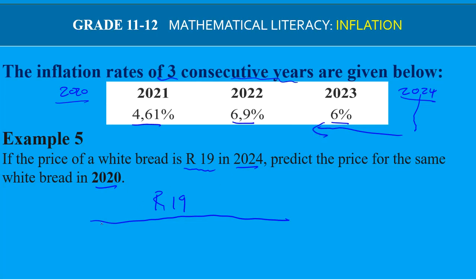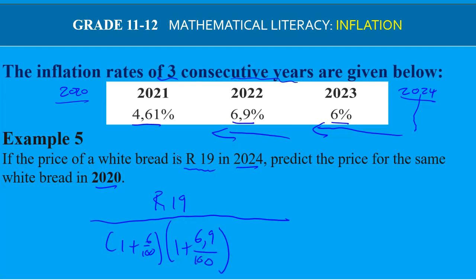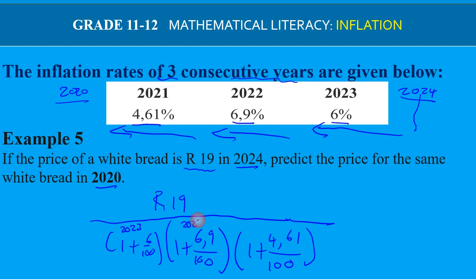The price in 2024 is R19. Going back in time, we divide first by the 2023 bracket, then by the 2022 bracket (6.9%), then by the 2021 bracket (4.61%). Working through these three division brackets going from 2023 back to 2021, the predicted price of white bread in 2020 is R16.03.